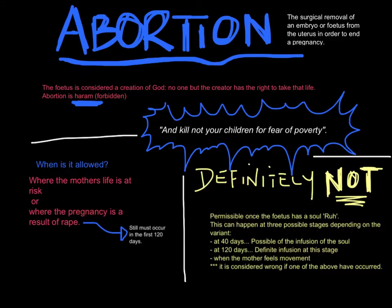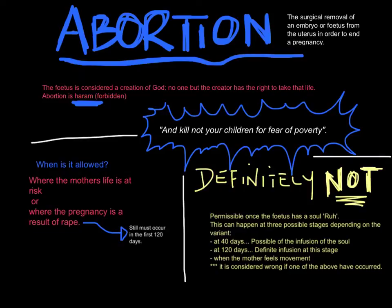What does Islam say about abortion? Abortion is the surgical removal of an embryo or fetus from the uterus in order to end a pregnancy. In relation to Islam, the fetus is considered a creation of God — no one but the Creator has a right to take that life. For this reason, abortion is considered haram or forbidden. A key quote is: 'And kill not your children for fear of poverty.' Islam recognises two circumstances where abortion may be considered: where the mother's life is at risk, or where the pregnancy is a result of rape. Within these situations only, abortion is permissible only before the fetus has a soul, or ruh.